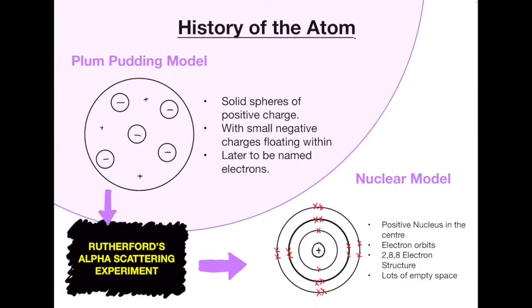Next we have the history of the atom. So starting off with the plum pudding model. The plum pudding model was thought to be a spherical ball of positive charge with little negative charges floating about, which we now know as electrons. Ernest Rutherford performed the alpha scattering experiment with the gold leaf. You may have heard of that before. I will go into more depth in that in a physics topic soon because it's explained in a lot more detail on the physics side of things.